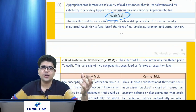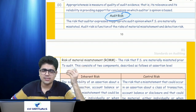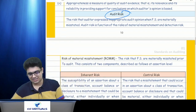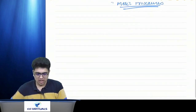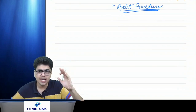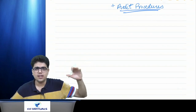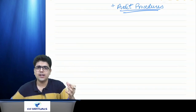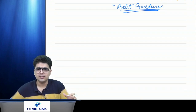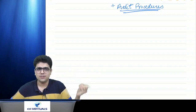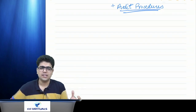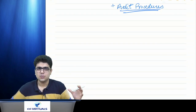How do we get to audit risk? There are certain components we need to discuss: inherent risk, control risk, overall risk of material misstatement, and detection risk. I want your attention for the next 10 minutes. If you get this understanding, your next 30 to 35 classes will be super smooth because these are the words and concepts that will be used again and again.